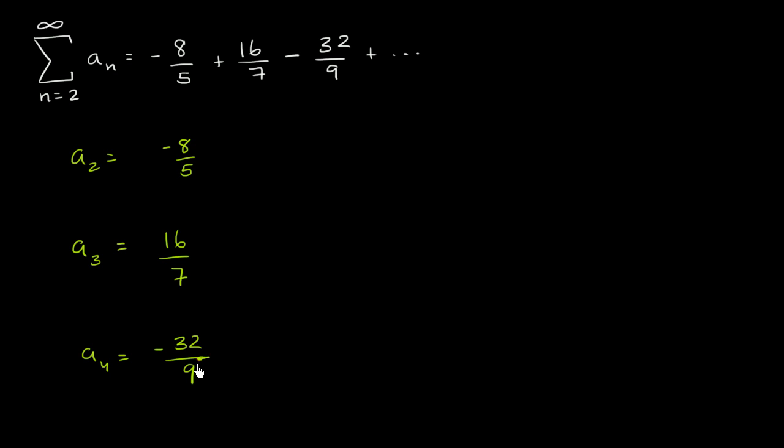So let's see if we can first find a pattern in the numerator. So when we go from negative 8 to 16, what's happening? Well, we're multiplying by negative 2. Now to go from 16 to negative 32, we're multiplying by negative 2 again.